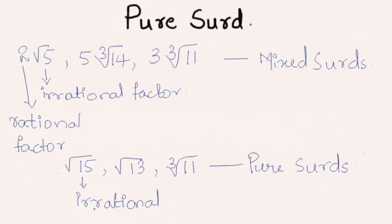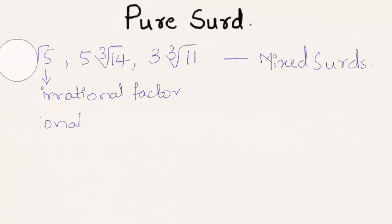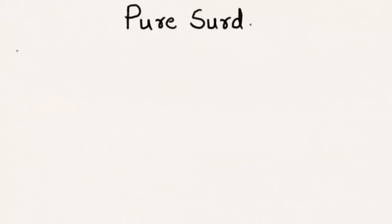Now let us solve a problem using the concept of pure surd. Here we have to express 3 by 4 root 8 as a pure surd.